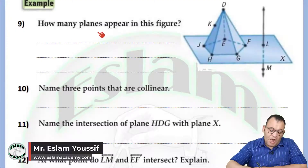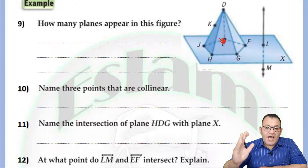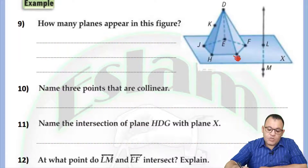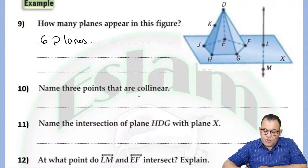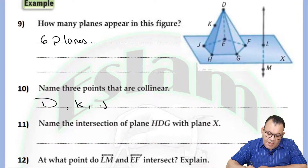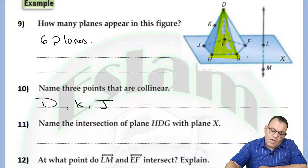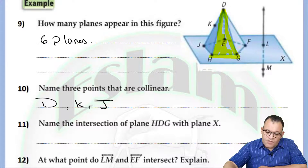In this problem, we need to know how many planes appear in the figure. We have one, two, three, four, five — because we have a pentagon at the base with five sides, plus one at the bottom, so we have six planes. Name three points that are collinear — we need three points lying on the same line: point D, point K, and point J lie on the same line. Name the intersection of plane HDG and plane X. The intersection of the two planes is one line — so the intersection is line HG.